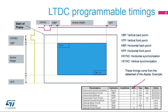To interface with TFT panels, all timings are programmable through the LTDC controller. These timings come from the TFT panel data sheet and are: VBP or Vertical Back Porch, VFP or Vertical Front Porch, HBP or Horizontal Back Porch, HFP or Horizontal Front Porch, H-Sync or Horizontal Synchronization, and V-Sync or Vertical Synchronization.